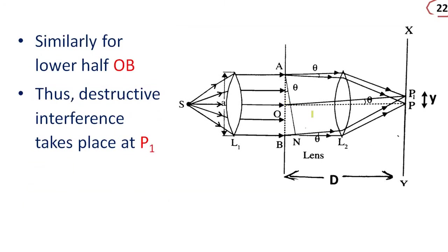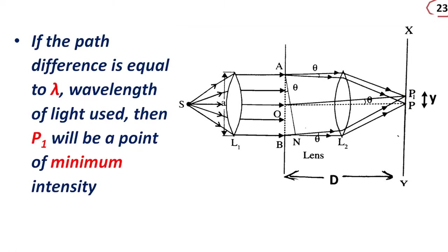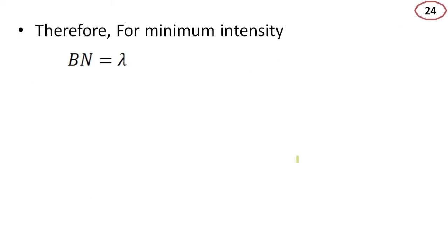Similarly, the case for the lower half also results in destructive interference. Thus, destructive interference takes place at point P1. That means if the path difference BN equals lambda, the wavelength of light used, then P1 will be a point of minimum intensity. Therefore, for minimum intensity, BN equals lambda, that is, a sin theta equals lambda.